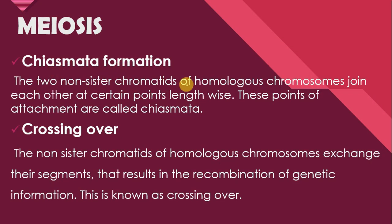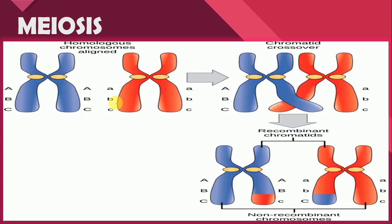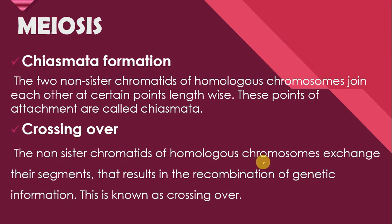Chiasmata formation: the two non-sister chromatids of homologous chromosomes join each other at certain points lengthwise. These points of attachment are called chiasmata. Sister chromatids are the two chromatids of the same chromosome, while non-sister chromatids belong to different homologous chromosomes. When the non-sister chromatids of both chromosomes attach at a point, this point is called chiasmata. Crossing over: the non-sister chromatids of homologous chromosomes exchange their segments, resulting in the recombination of genetic information. This is known as crossing over.